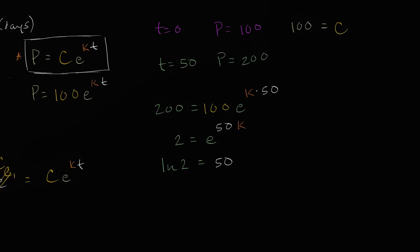All I did is took the natural log of both sides. Notice that this equation expresses the same thing. Natural log of 2 is equal to 50K means E to the 50K is equal to 2, which is exactly what we had written there. And now we can solve for K. Divide both sides by 50, and we are left with K is equal to the natural log of 2 over 50.